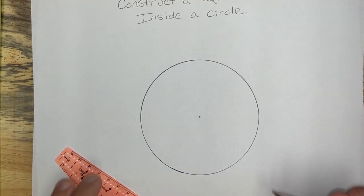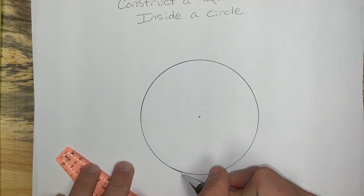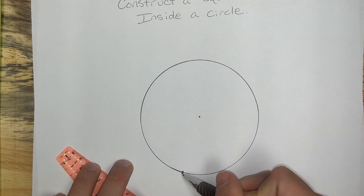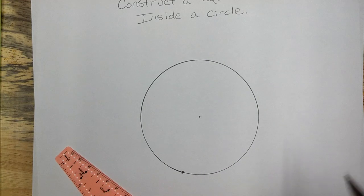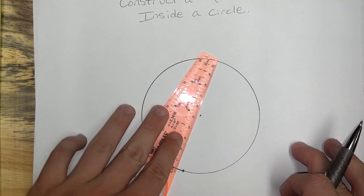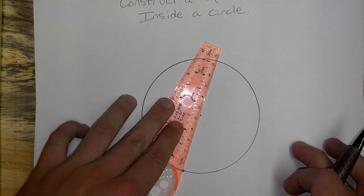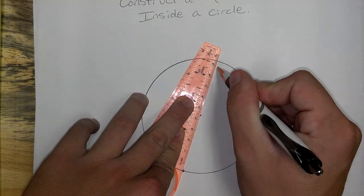Now, since we have the center, if I put a point out here anywhere I want on my circle, I can connect that point on the circle to the center and create a radius. Or, if I keep going and go all the way through, I'm going to create a diameter.